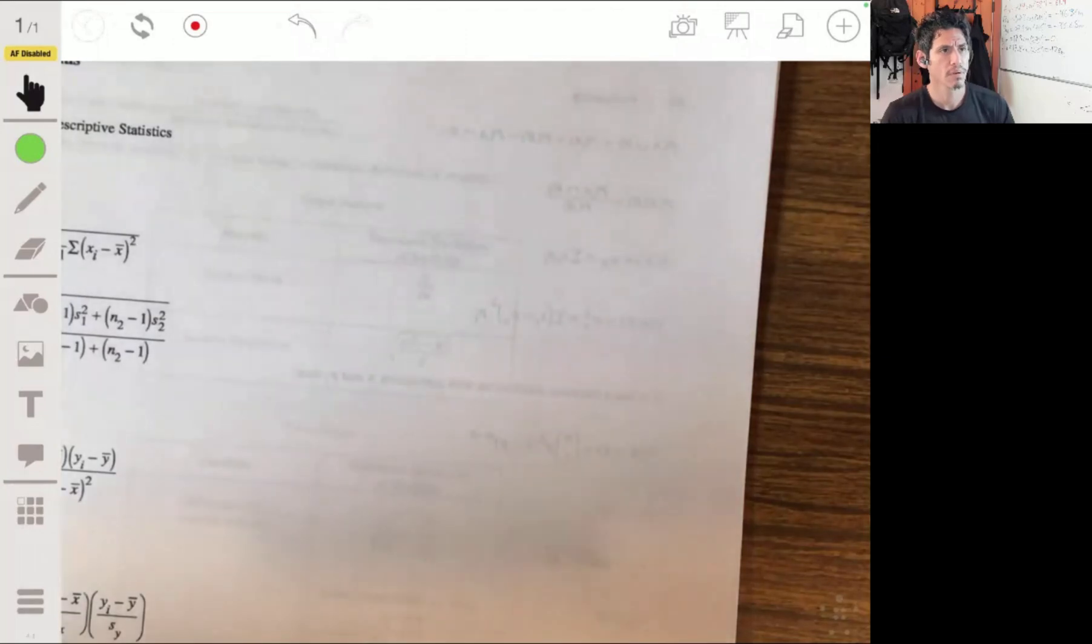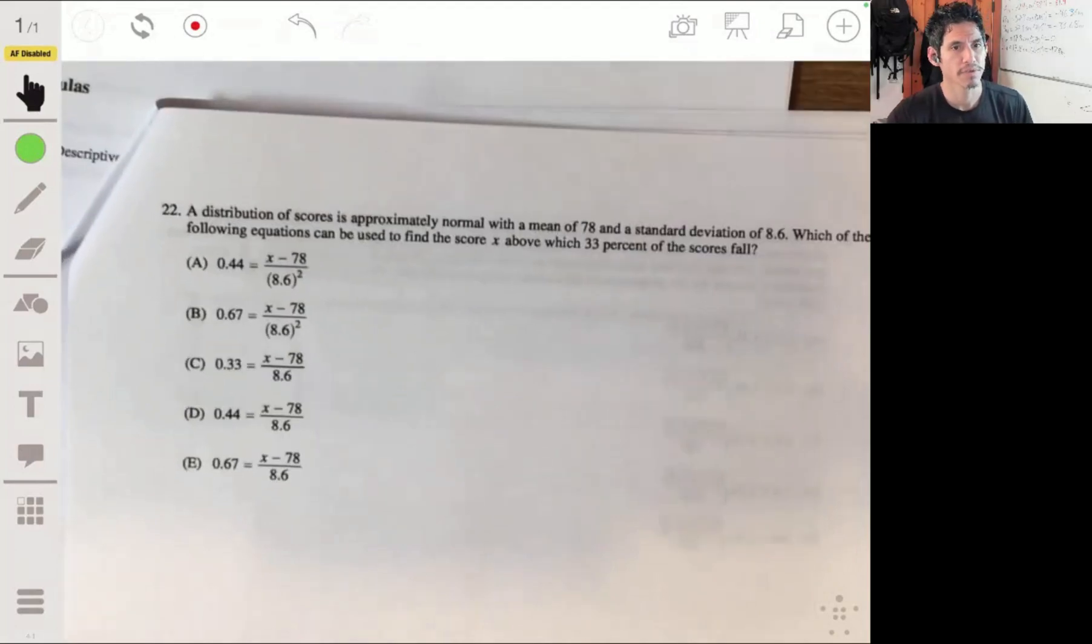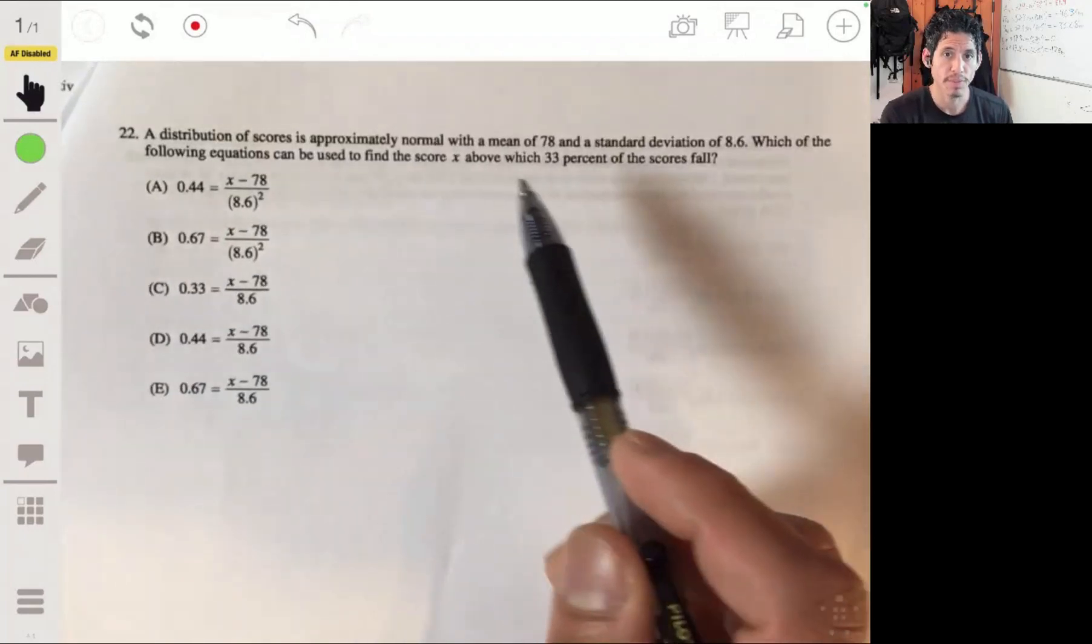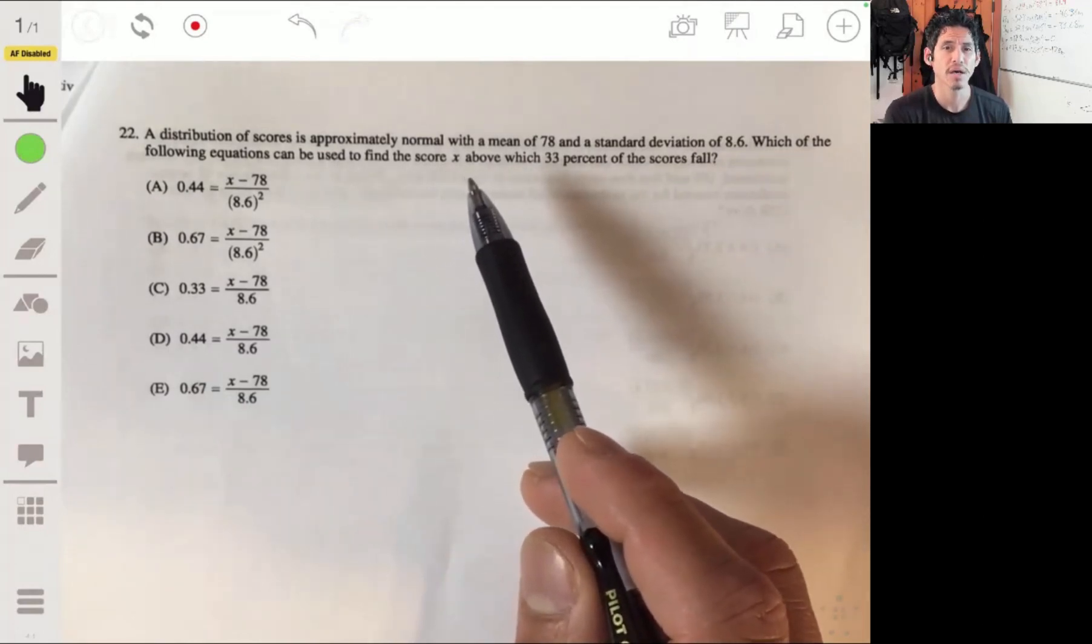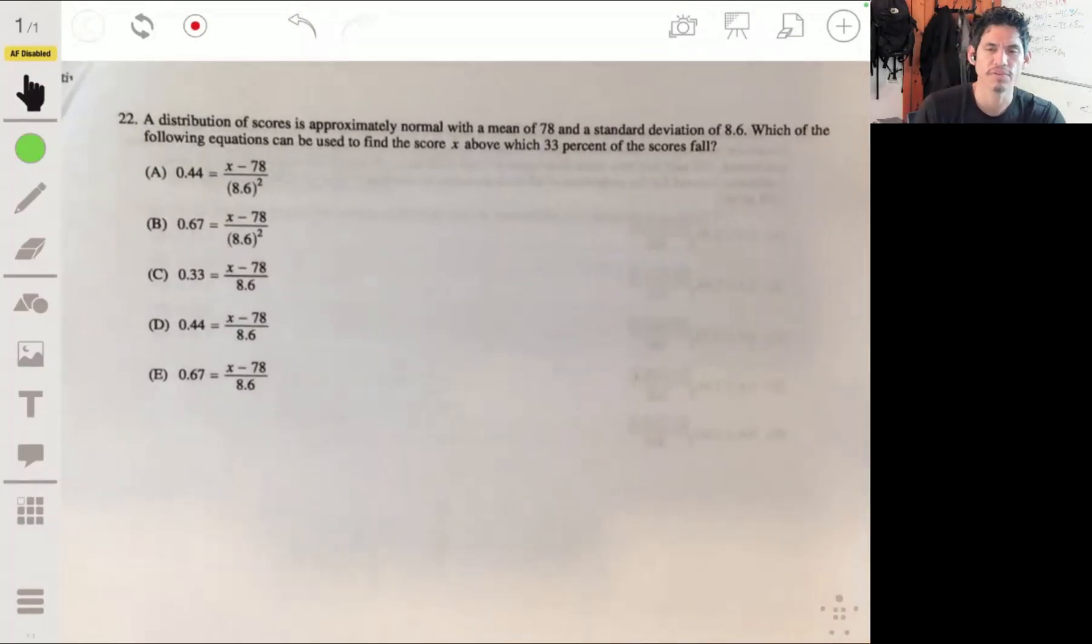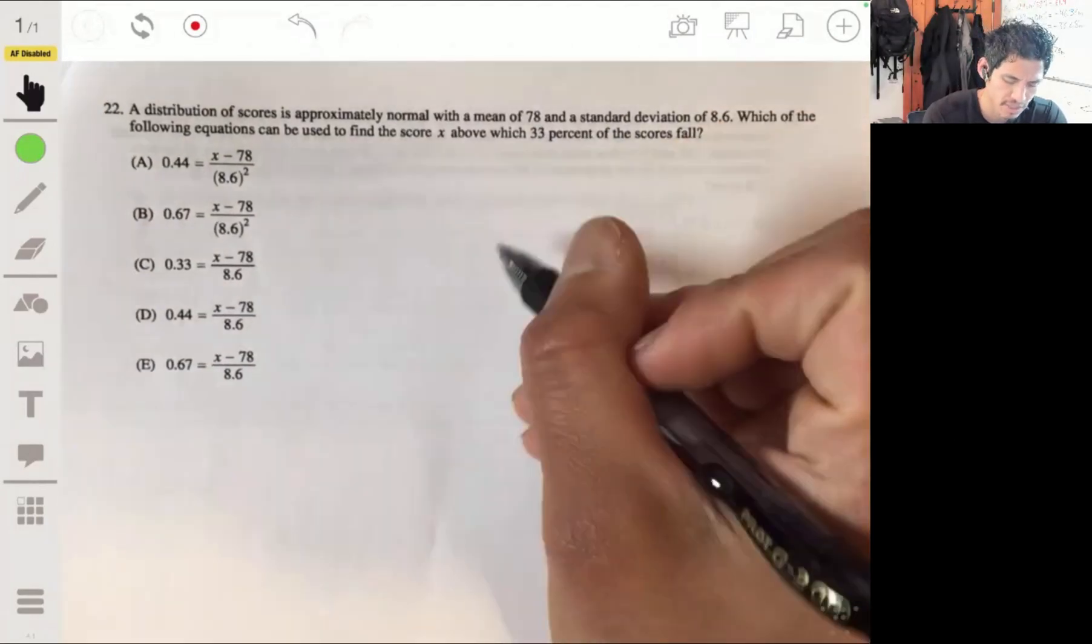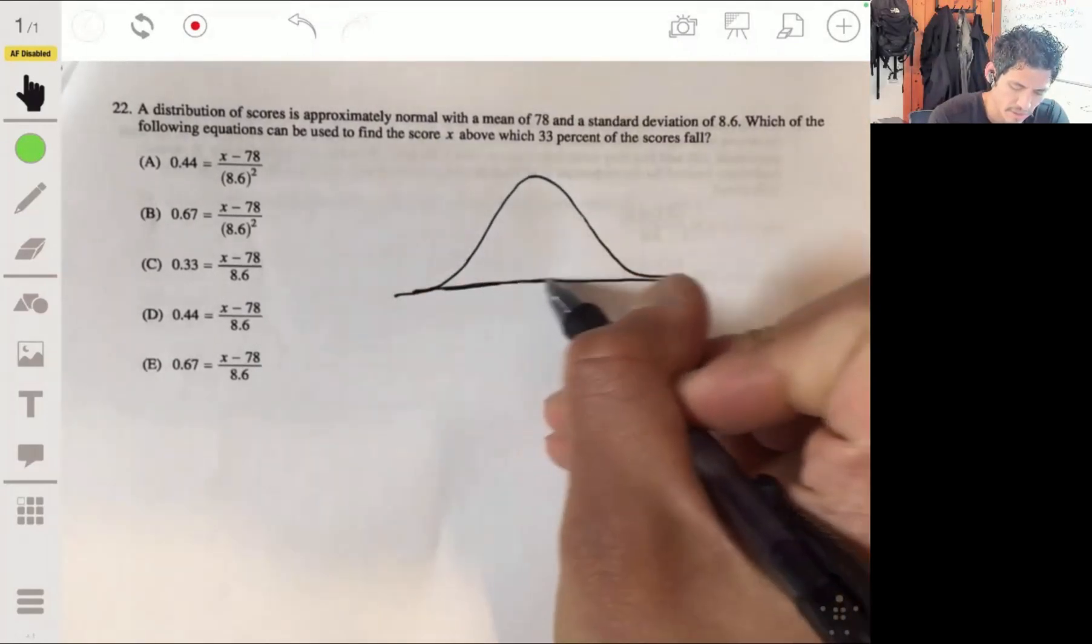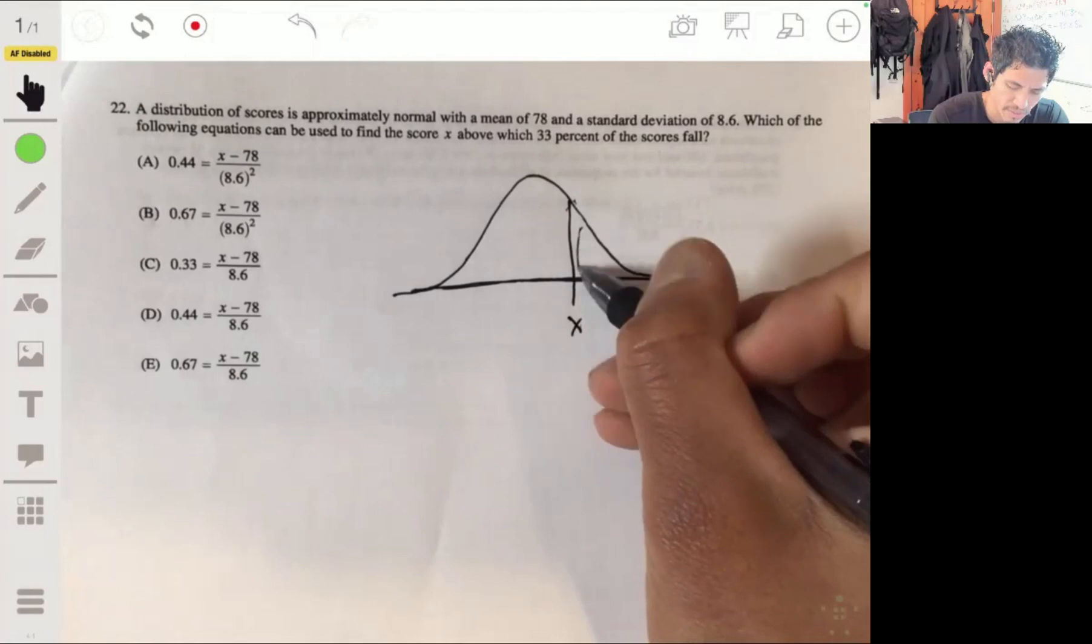Problem 22. Let's see what we got here. So here we have a distribution of scores. It's approximately normal with a mean of 78 and standard deviation of 8.6. Which of the following equations can we use to find a score x above which 33% of the scores fall? I guess they're just trying to confuse you and test to see if you really understand z-scores and such. So let me draw a visual so we can get what's going on.